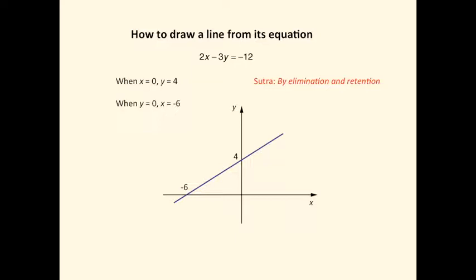The y intercept is found by eliminating x from the equation by letting x equals 0, so we have minus 3y equals minus 12, in which case y is 4. For the x intercept we eliminate the y term by letting y equals 0, from which we get 2x equals minus 12, and hence x is minus 6.